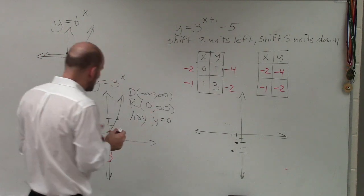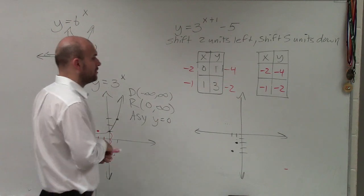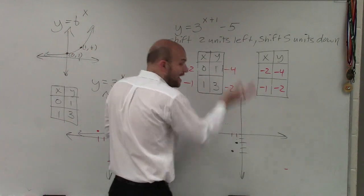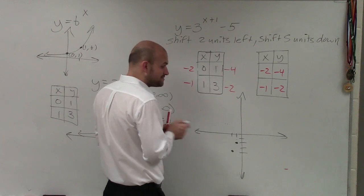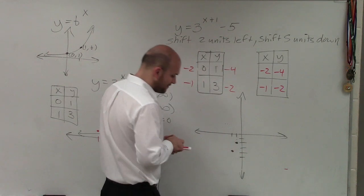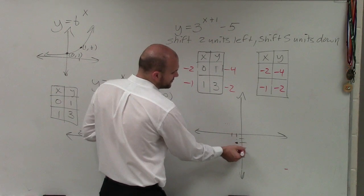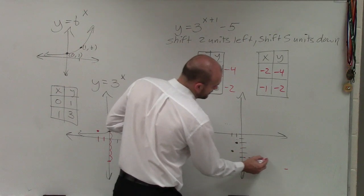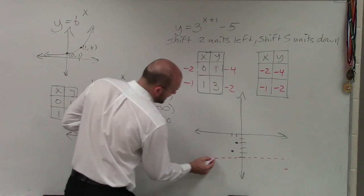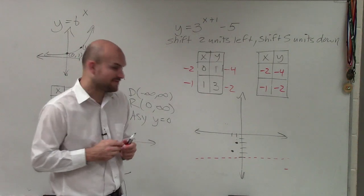And then the next thing you need to remember, also we have an asymptote at y equals 0. Well, if I shift this graph down five units, that means my asymptote has now moved down five units. So now I have this nice little dotted line at y equals negative 5.